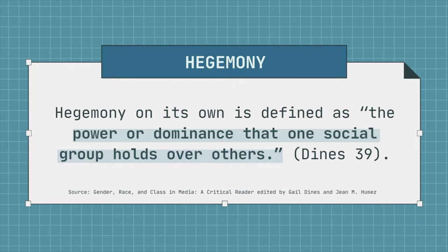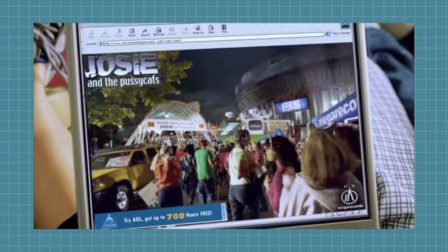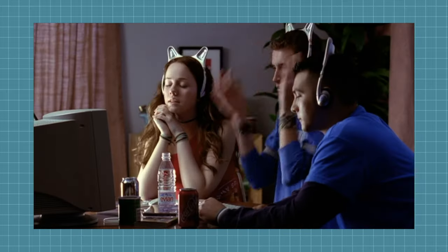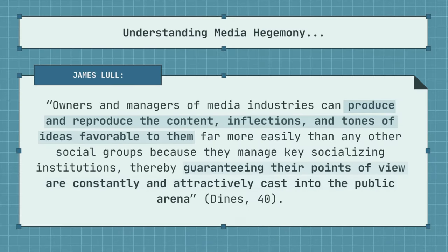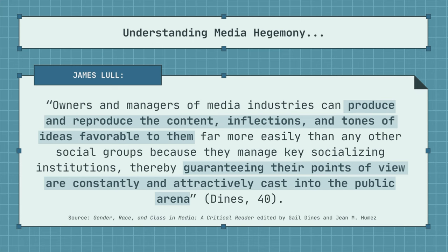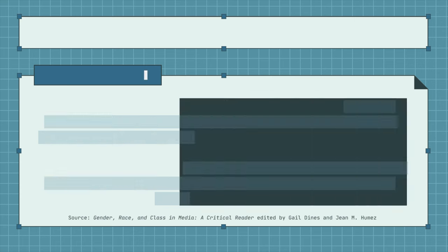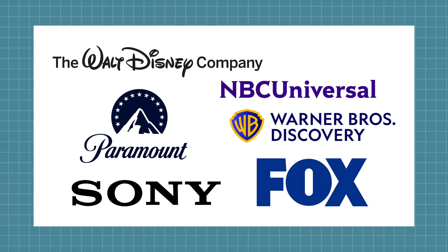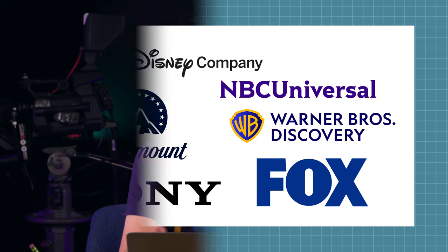Let's consider the idea of media hegemony. Hegemony on its own is defined as the power or dominance that one social group holds over others. Cultural hegemony is a means of manipulating the culture of a society in an effort to gain power. In media, hegemony takes the form of the owners and managers of media industries who control the media messages being created. James Lull explains this best in his essay titled 'Hegemony.' He writes: owners and managers of media industries can produce and reproduce the content, inflections, and tones of ideas favorable to them far more easily than any other social groups, because they manage key socializing institutions, thereby guaranteeing their points of view are constantly and attractively cast into the public arena. Currently, there are only six major companies that own about 90% of all US media.